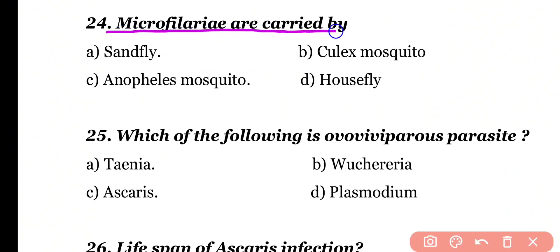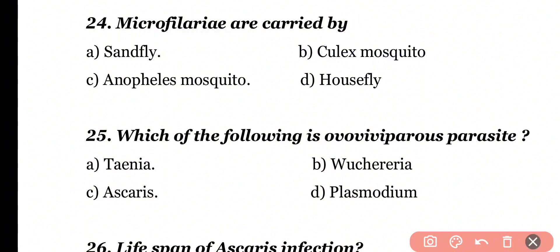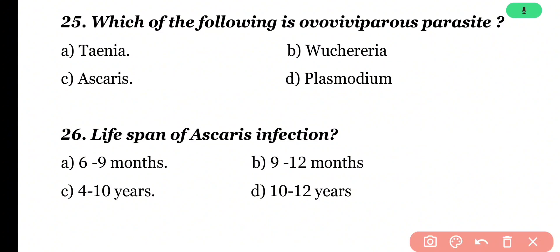Question 24: Microfilariae are carried by sandfly, Culex mosquito, Anopheles mosquito, or housefly. Correct answer is option B. Microfilariae are the larval forms of Wuchereria bancrofti and they are carried by Culex mosquito.